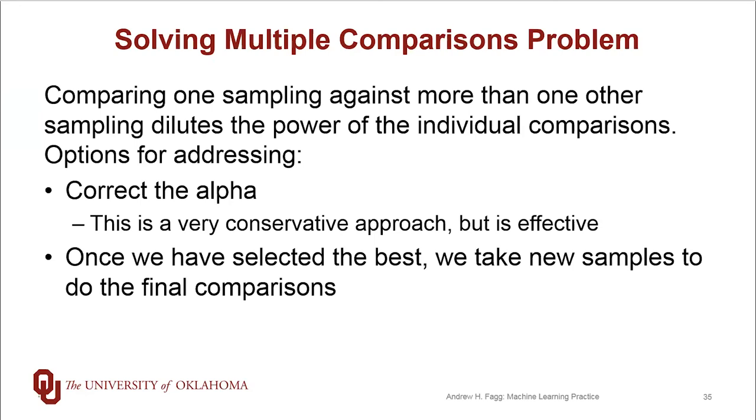And how that plays out in the context of the stockbroker context is that we've got our K stockbrokers. They each get tested, we select the best performing one, and then we do a new test on just the winning stockbroker. So we select a new set of stocks that are independent of the ones that we just tested the broker on. We ask them to make another prediction for a week out. And if that individual stockbroker then satisfies an alpha of 0.05, then we'll select that broker as our broker.